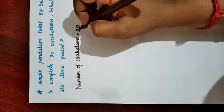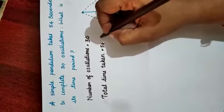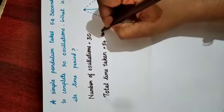Number of oscillations is equal to 30. Total time taken is equal to 54 seconds.